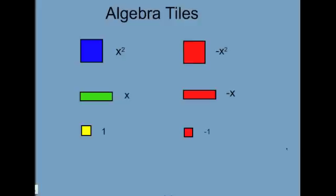Then, to represent the negative versions, or the opposites of each of these, we'll use the same size shape, but instead of being the color, they'll be red. So we have now x squared, x, and 1, and then their opposites, negative x squared, negative x, negative 1.